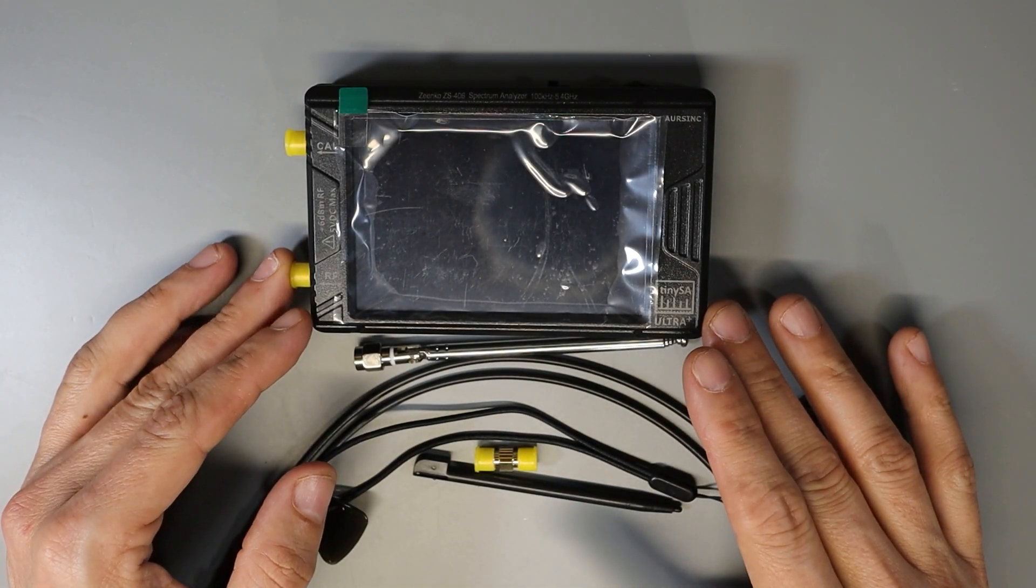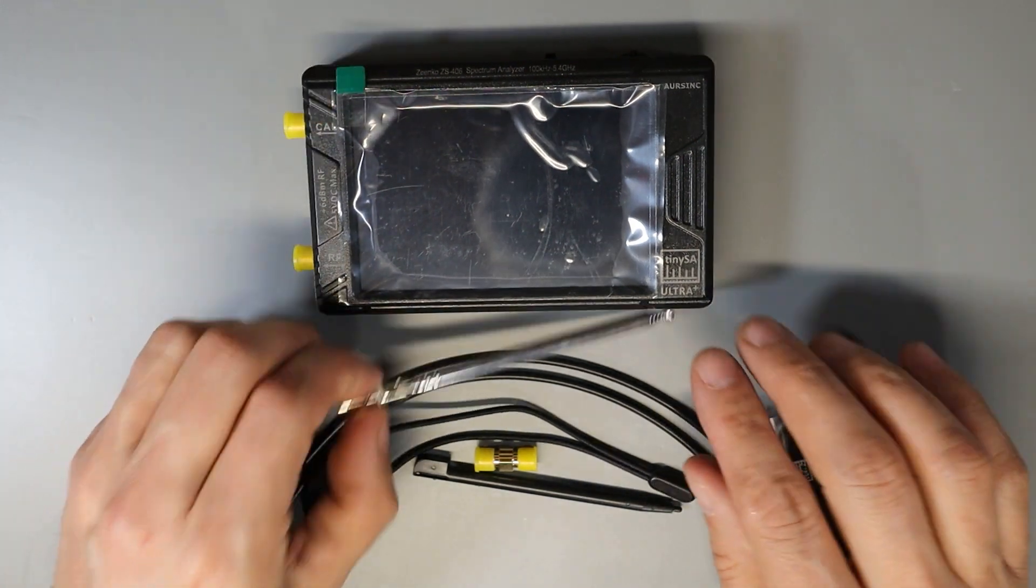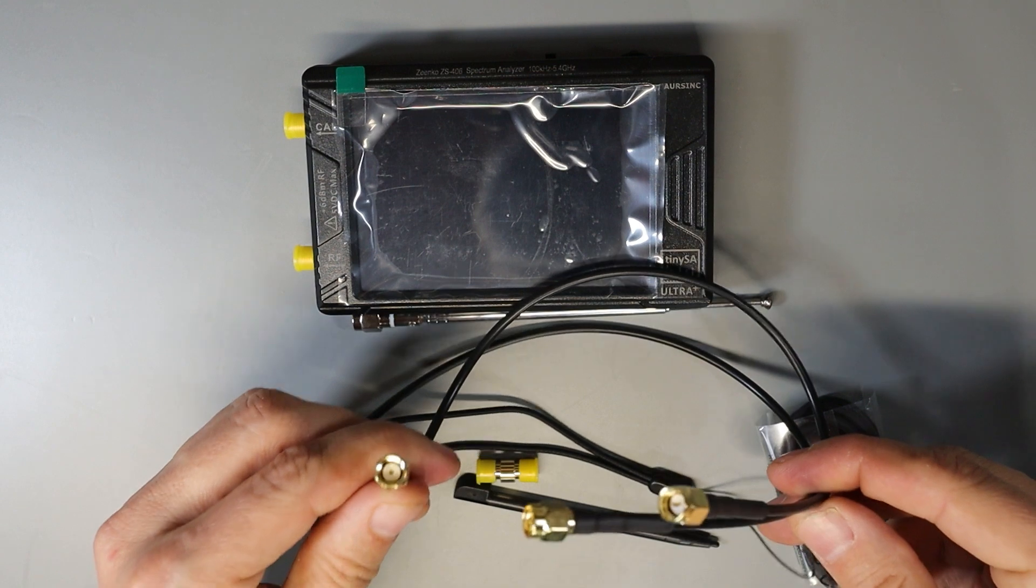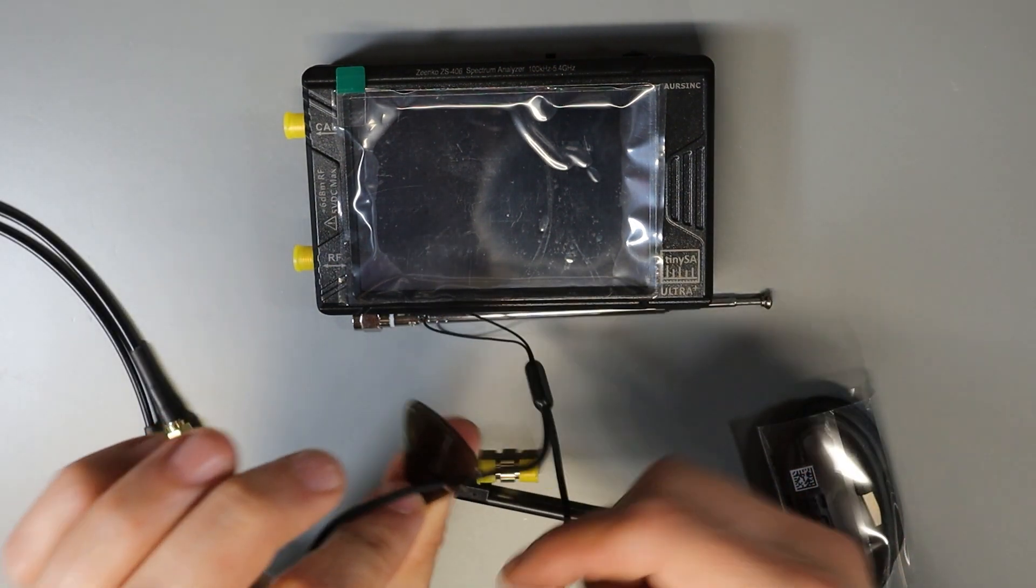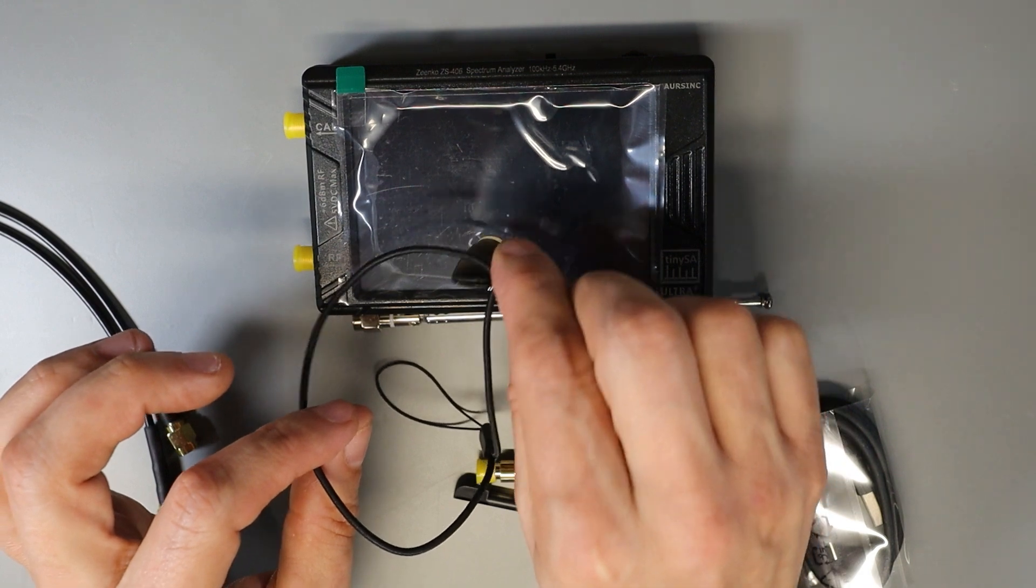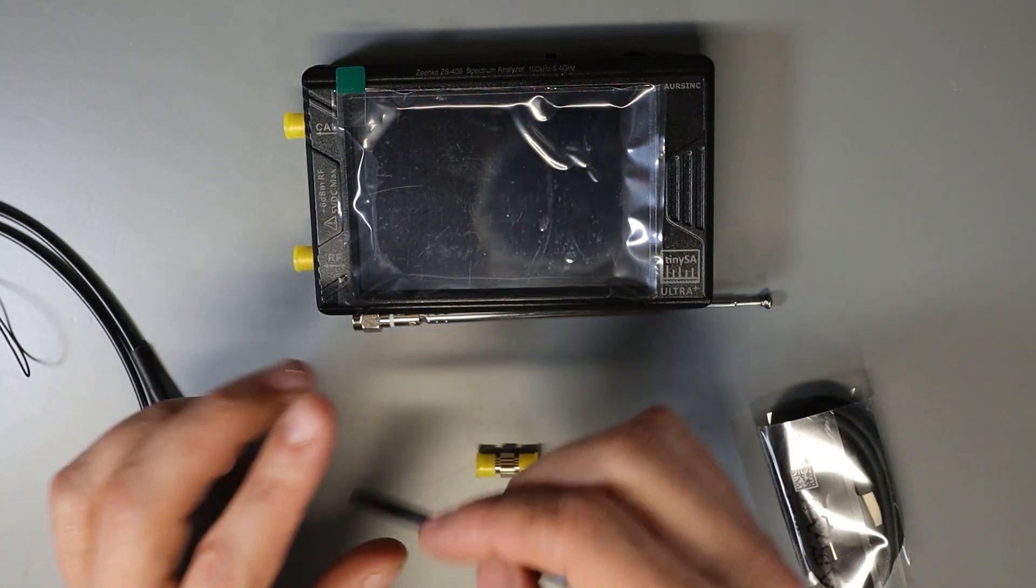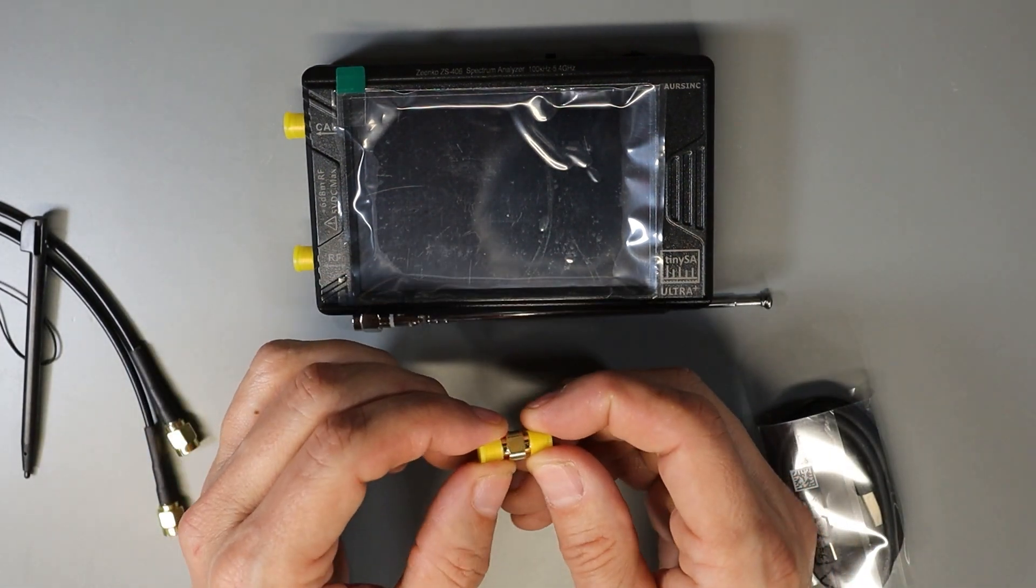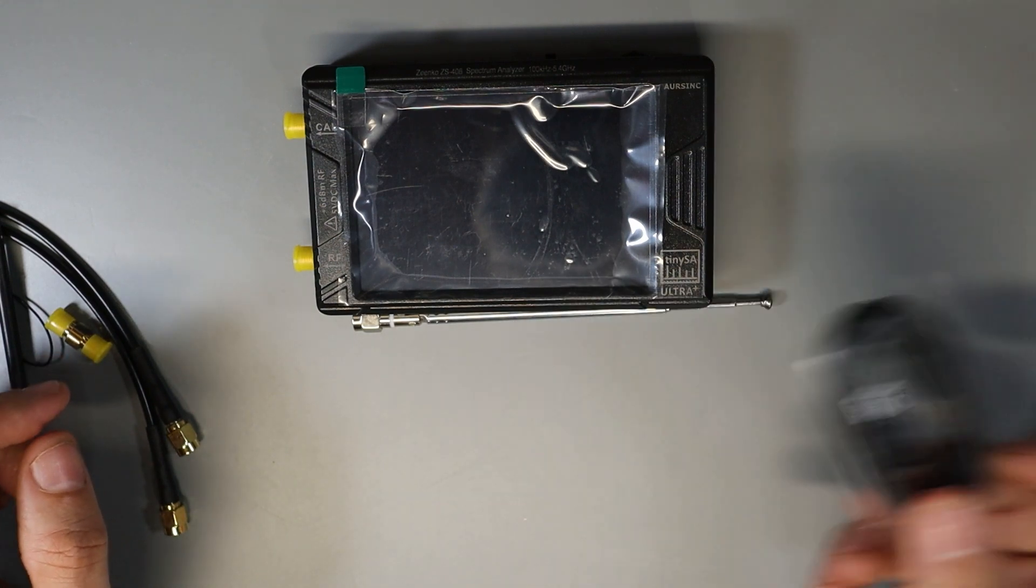Here's a look at everything that comes with the TinySA. We get the TinySA Ultra itself, a telescoping antenna, two jumper cables with SMA male ends, a guitar pick wrist strap to be used for activating the screen, but we also get a stylus that you can use for the screen and this is actually what I prefer. We get an SMA female to female coupler and a USB-C charging cable.